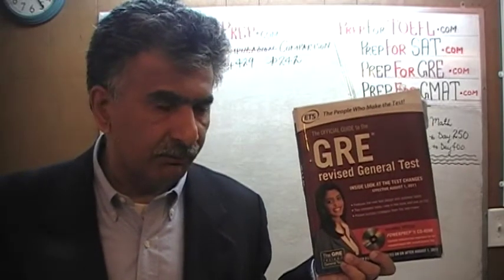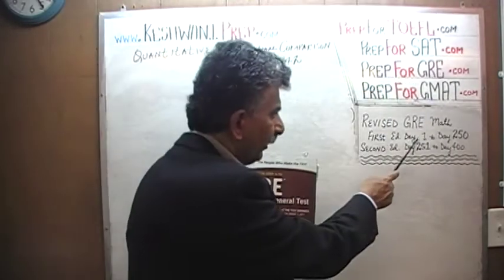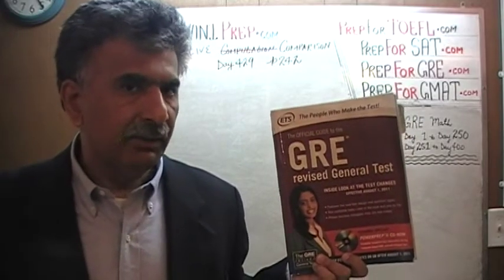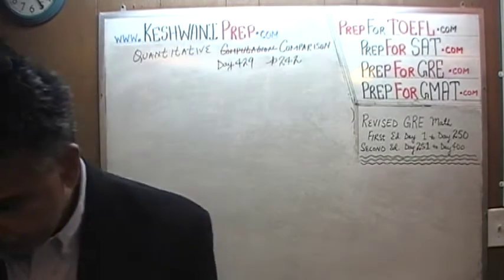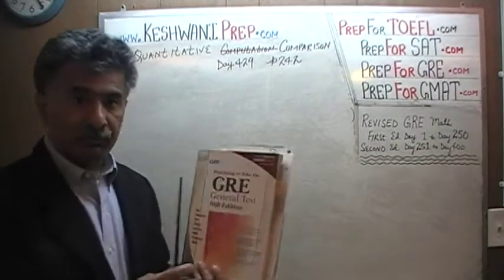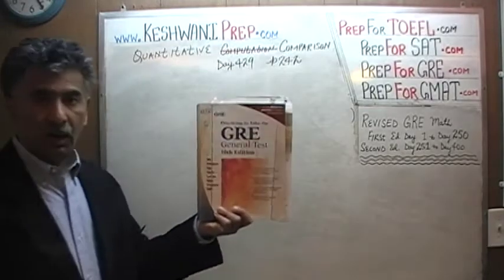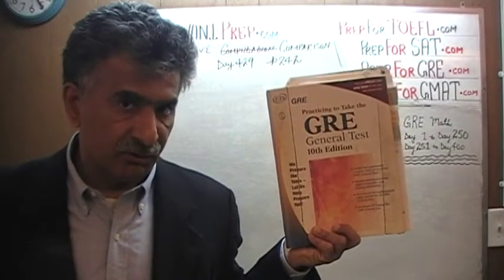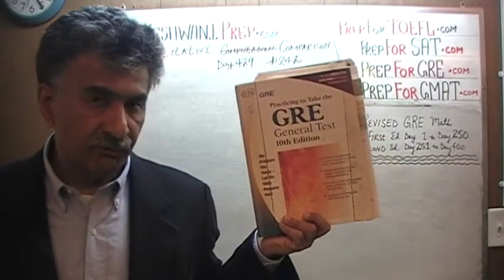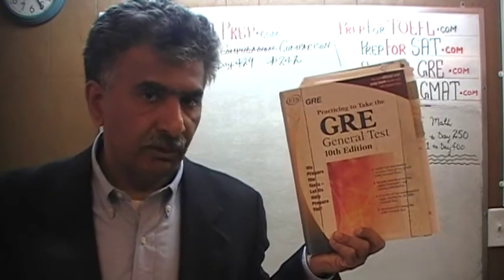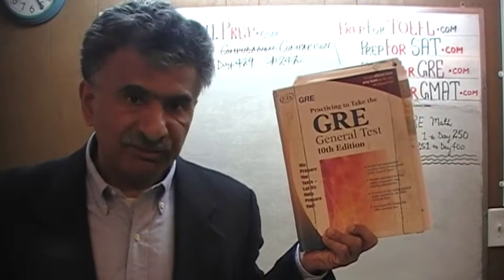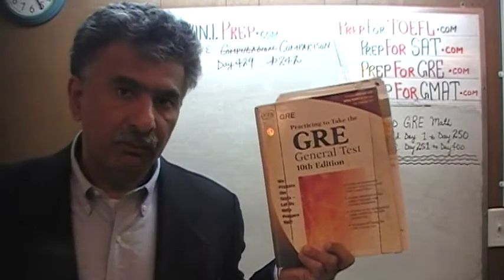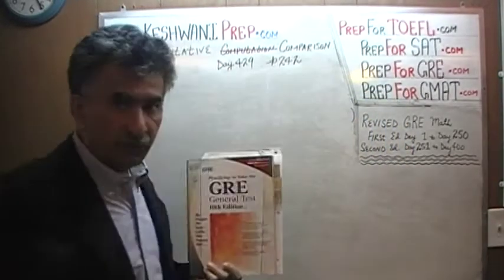If you are interested in watching the original solutions, you will find them from day number 1 through 250. Original solutions tend to be a little lengthier and more in depth. Right now we are in the middle of solving some quantitative comparison questions out of the tenth edition of the general GRE, because the other two books simply do not contain enough quantitative comparison questions. To get extra practice, from day number 401 we started solving quantitative comparison questions from this book, and we are on page 242.